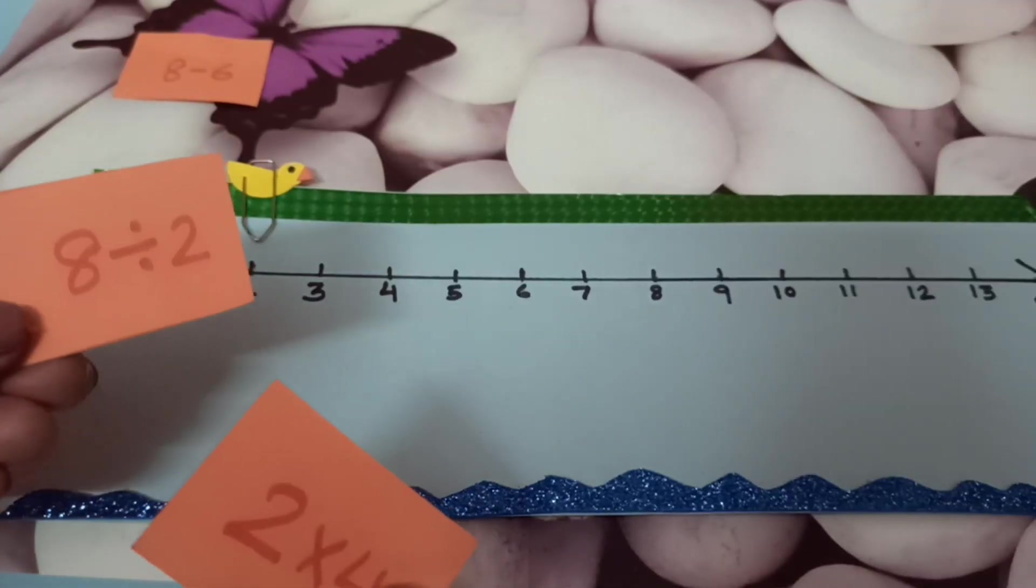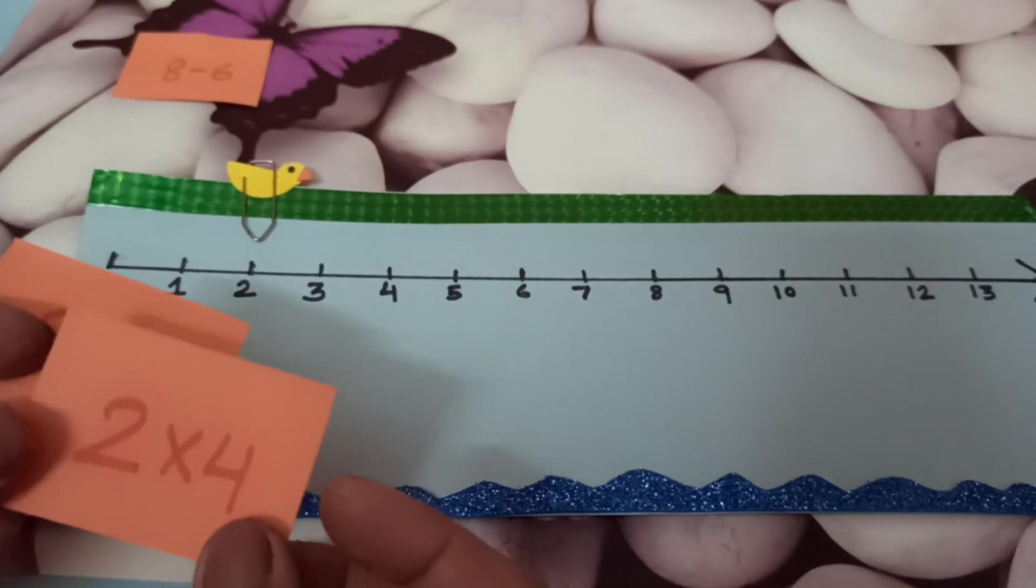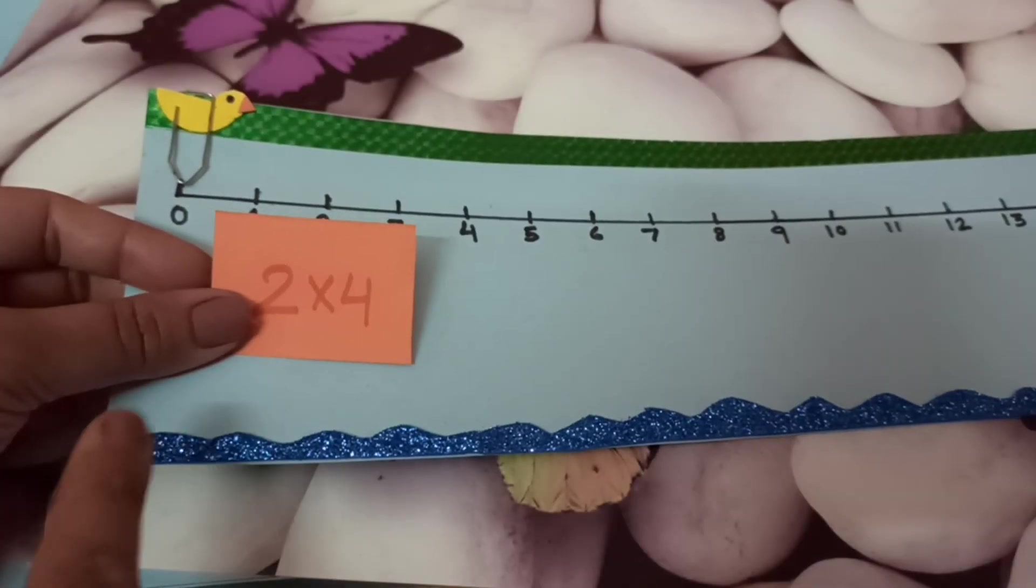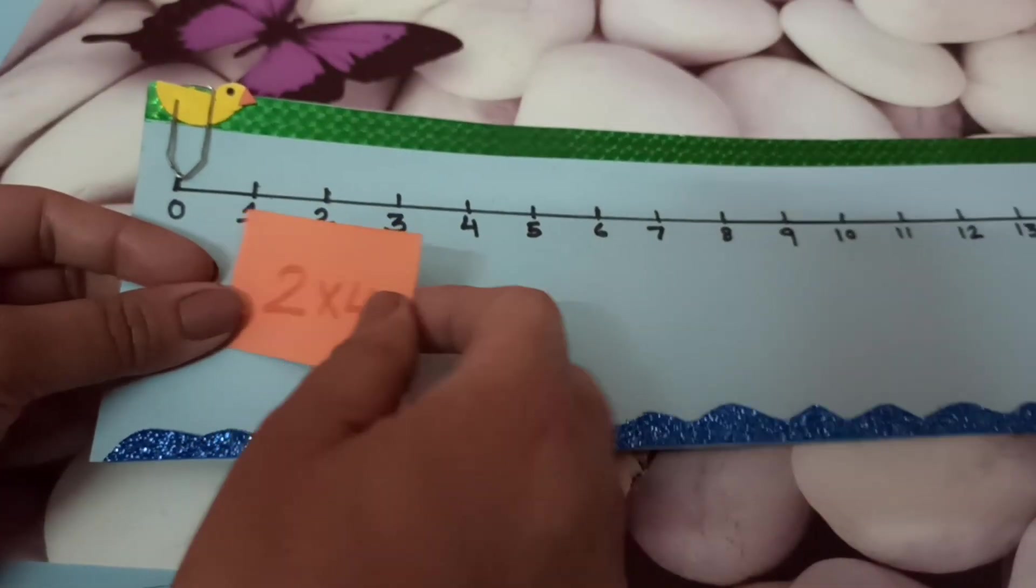Now here I have 2 cards, multiplication and division. Let's do the multiplication first. We have to multiply 2 by 4.